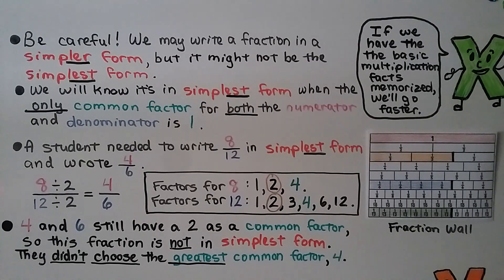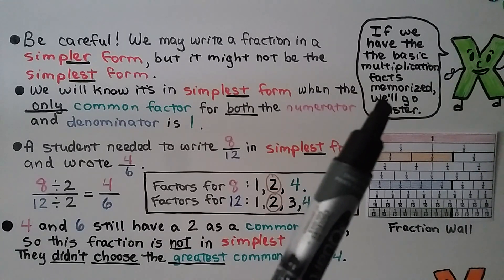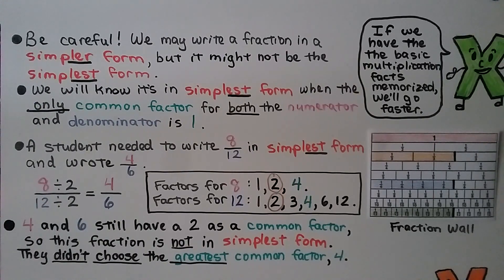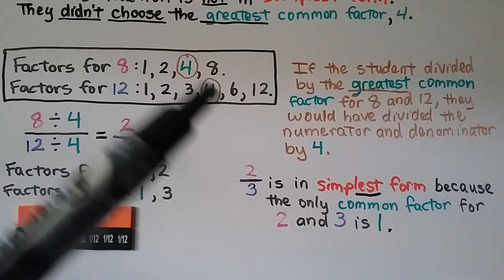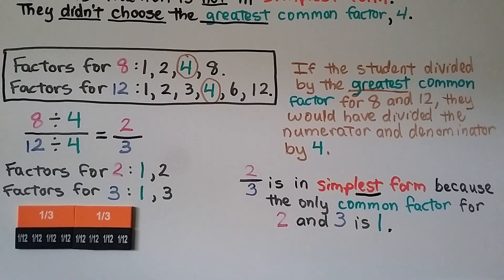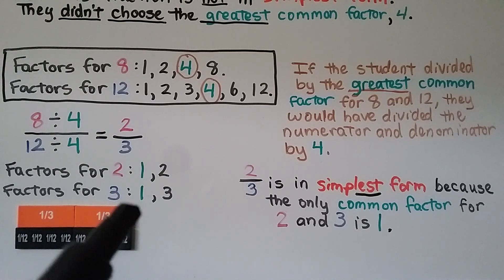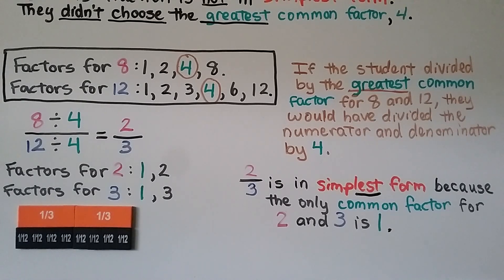Memorizing your multiplication facts helps because you'll know your factors and products, and find the greatest common factor quicker. If the student had divided by the greatest common factor — four — they would have divided the numerator and denominator by four and gotten two-thirds. We can check: the factors for two are one and two; the factors for three are one and three. The only factor they have in common is one, so two-thirds is in its simplest form.